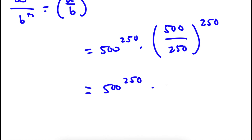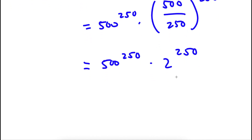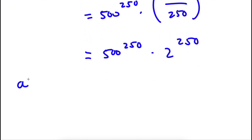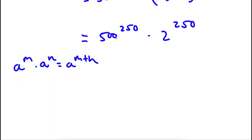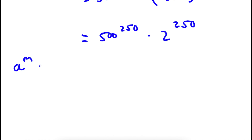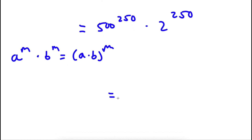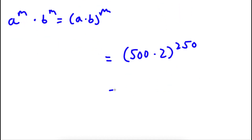So now I have 500 to the power of 250 times 2 to the power of 250. Now, if I have something in the form a to the power of m times b to the power of m, this is equal to a times b to the power of m. So 500 to the power of 250 times 2 to the power of 250 is going to equal 500 times 2 to the power of 250. 500 times 2 is 1,000, so now I have 1,000 to the power of 250.